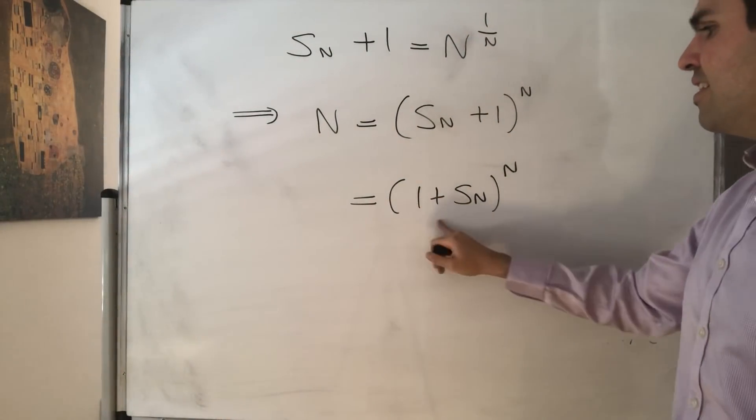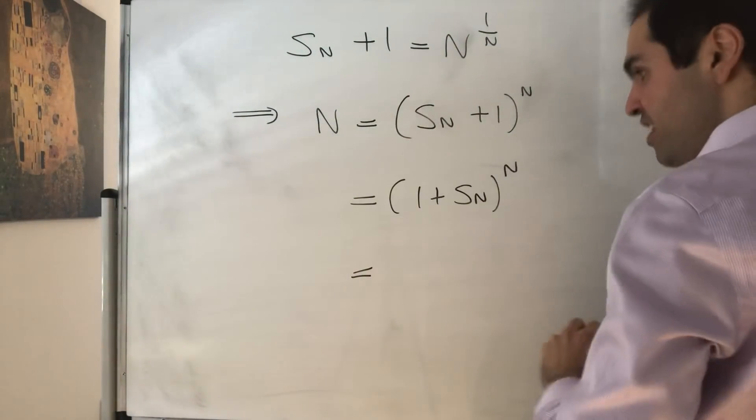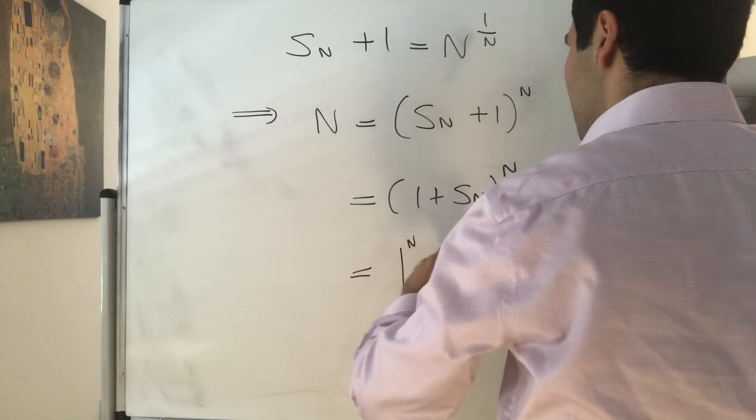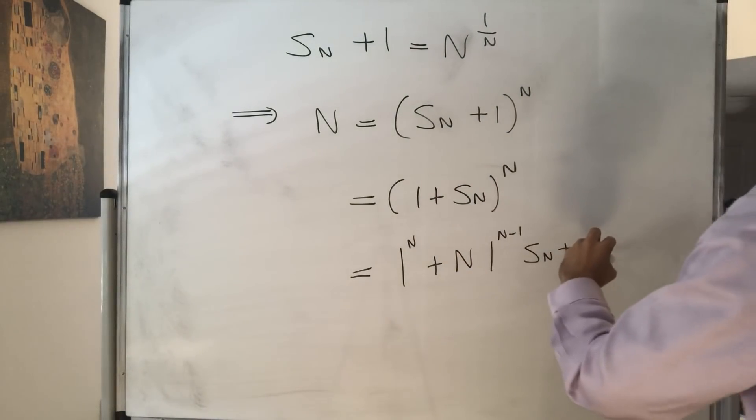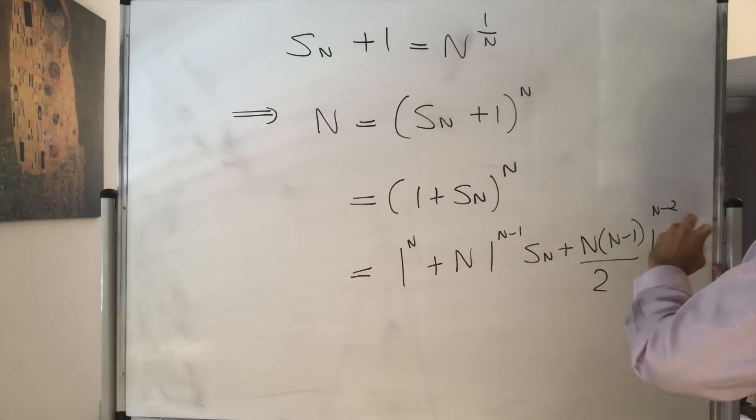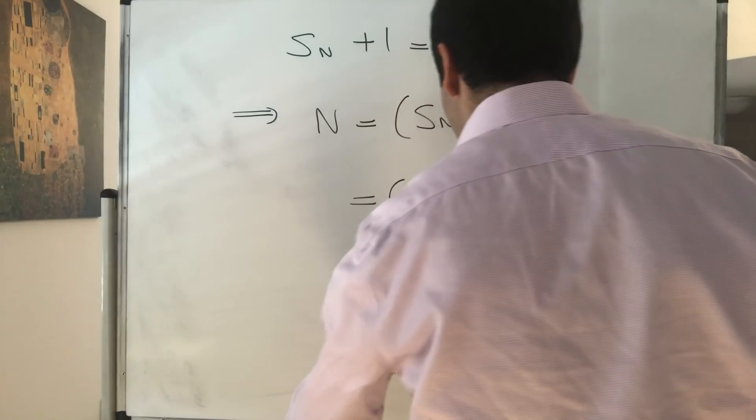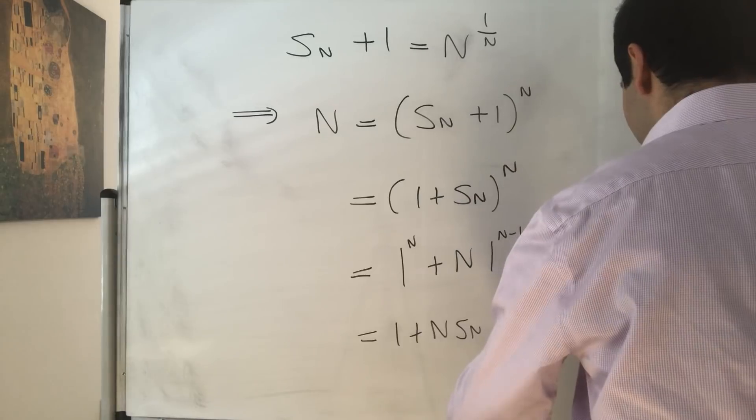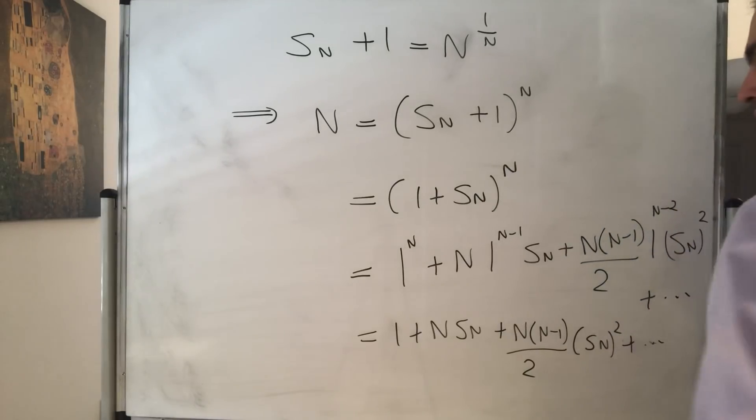And the nice thing is this is the perfect situation to apply the binomial theorem which I've done in the previous video and all that this says is this is 1 to the n plus n times 1 to the n minus 1 times S_n and now unfortunately we need the next term so n times n minus 1 over 2, S_n squared plus some positive junk. And so this becomes 1 plus n S_n plus n times n minus 1 over 2 S_n squared plus again some positive junk.